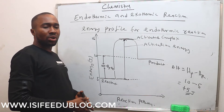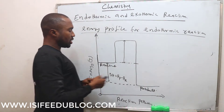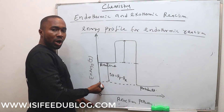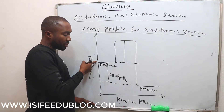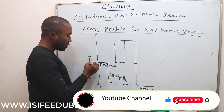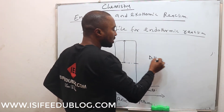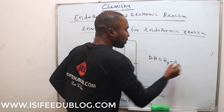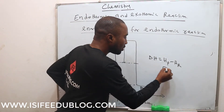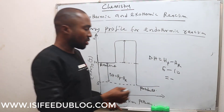The energy profile for the exothermic reaction can also be shown. In an exothermic reaction, the heat of the product is less than the heat of the reactant. For instance, labeling the y-axis as 0, 5, 10, and 15, the enthalpy change — delta H — is heat of product minus heat of reactant. The heat of the product is 5 and the heat of the reactant is 10. So 5 minus 10 gives minus 5.